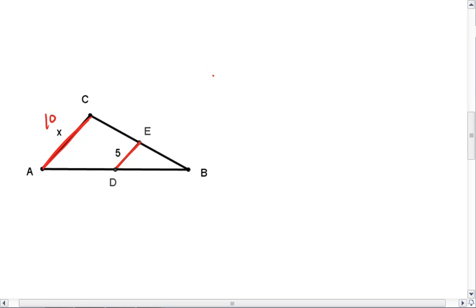You could also say that 2 times the mid-segment will equal the third side, or this mid-segment equals half of the third side. Any way you look at it, you end up with X equals 10.